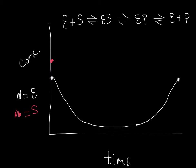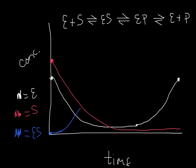Free substrate is going to go down, and we don't get it back unless the reaction goes backwards — so it looks like a decreasing curve. The concentration of the Michaelis complex starts at zero at time zero. It goes up, then reaches a steady plateau because it's at equilibrium with EP, and then at some point goes back down as you start to run out of substrate.